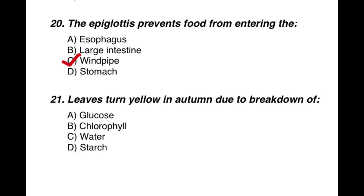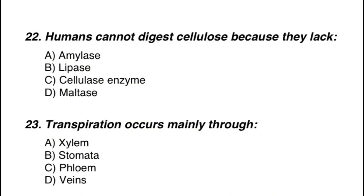Question 21: Leaves turn yellow in autumn due to the breakdown or absence of — the correct option is B — chlorophyll. Question 22: Humans cannot digest cellulose because they lack — the correct option is C — cellulase enzyme. Question 23: Transpiration occurs mainly through — the correct option is B — stomata.